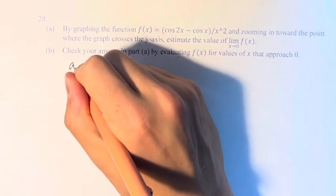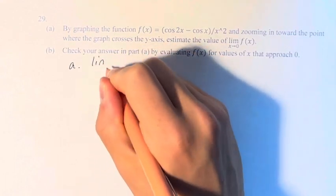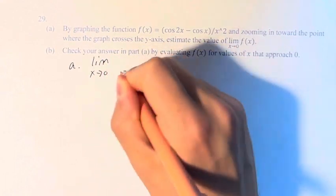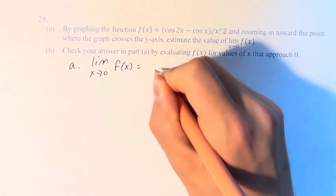So A, our answer is the limit as x approaches zero of f(x) is equal to negative 1.5.